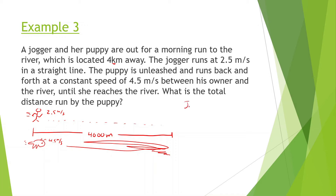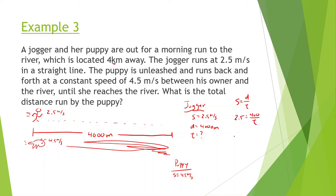First thing we want to know is the jogger is going to be running with a speed of 2.5 meters per second, going a distance of 4,000 meters. When it comes to the puppy, we only know its speed of 4.5 meters per second. So let's figure out how long it's going to take the jogger to go 4,000 meters. Speed equals distance over time: 2.5 equals 4,000 over T, so T equals 4,000 divided by 2.5, and we get 1,600 seconds.